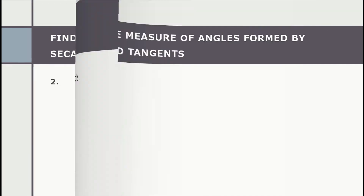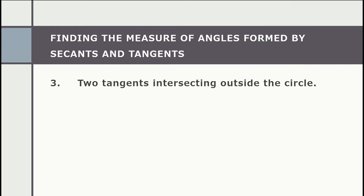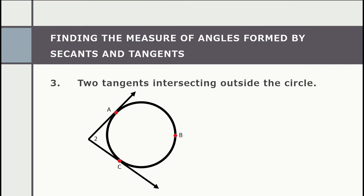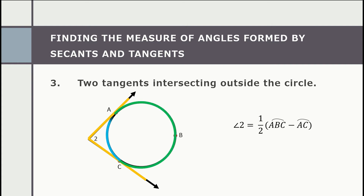Number three: two tangents intersecting outside the circle. Just like in number two, the angle is formed outside and we have two intercepted arcs, so we subtract the two arcs first, then multiply the difference by one half. For this example, angle two is equal to one half multiplied by the difference of the measure of arc ABC and arc AC.